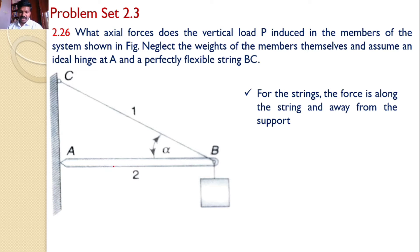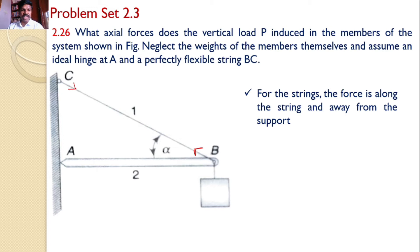In order to proceed further, if the system consists of any strings, ropes, struts, or cables, the force is along the string and it is away from the support. That means if you consider string BC and look at it from point B, the force is away from B, and the force is away from C as well. So these are tensile forces.